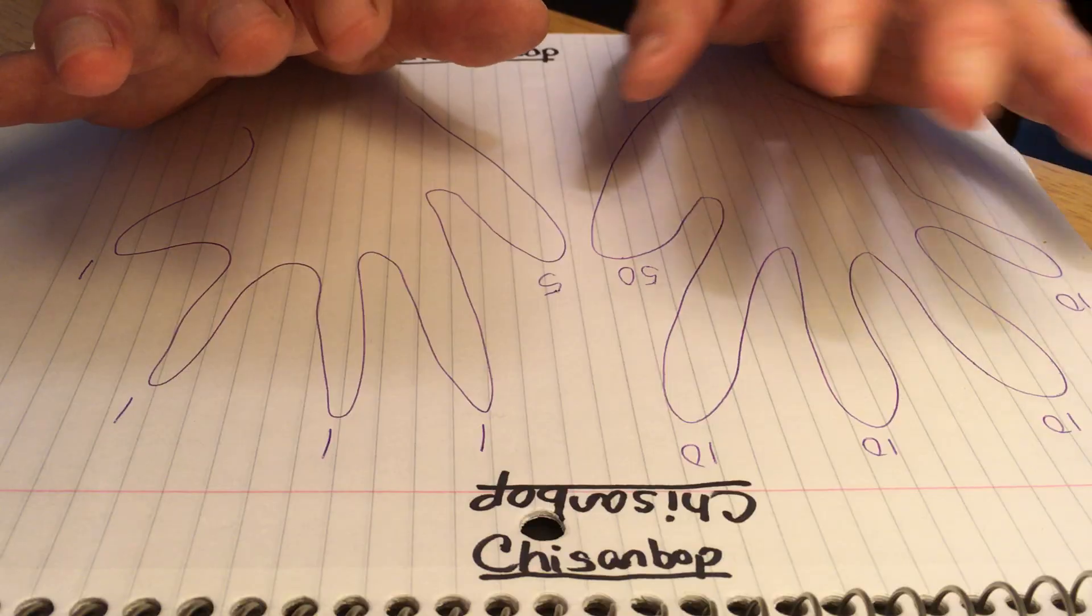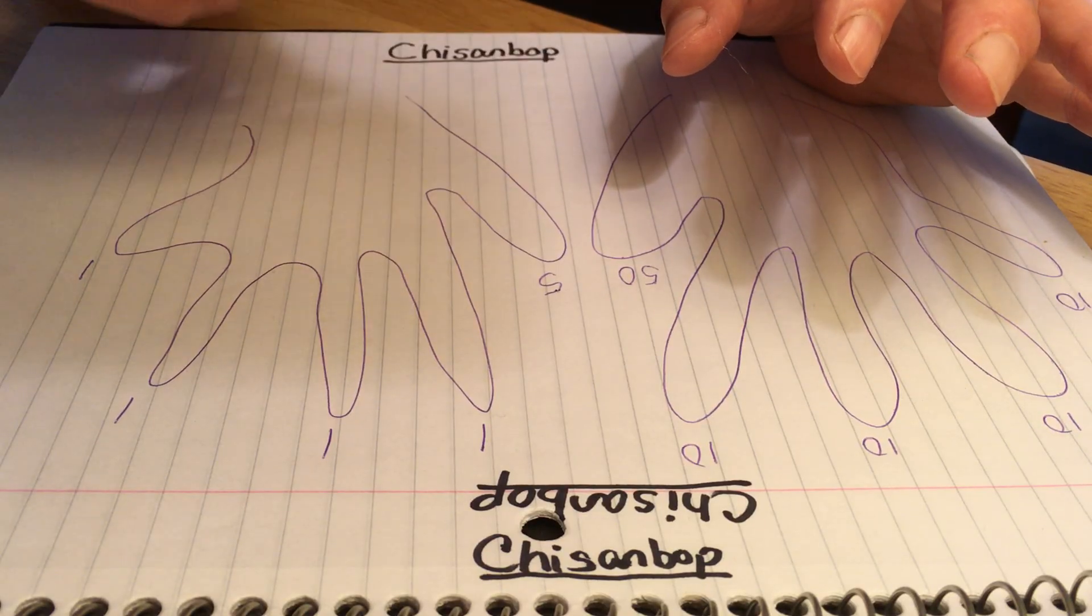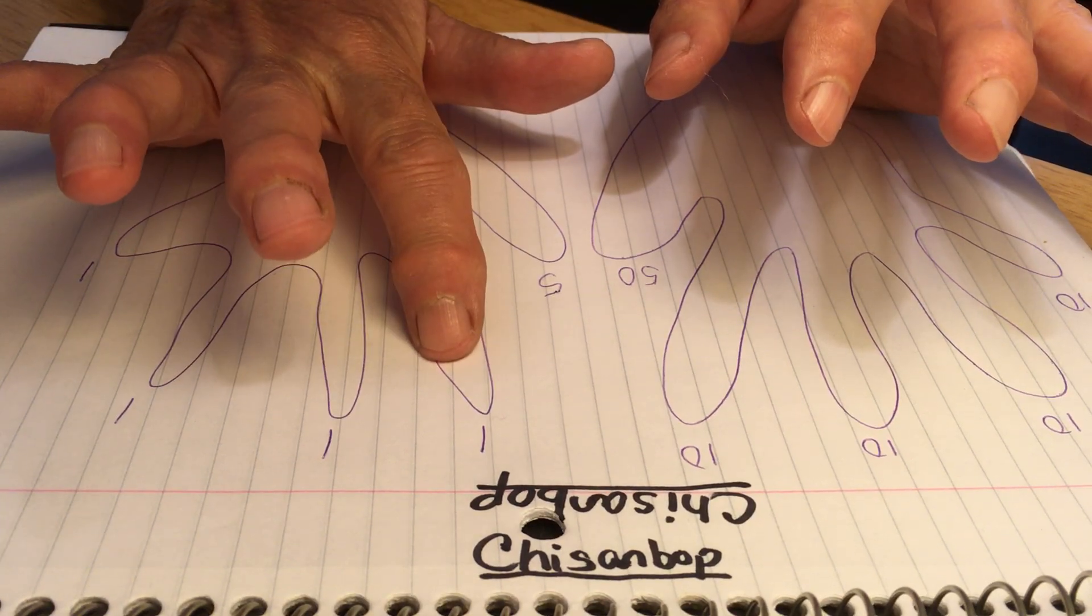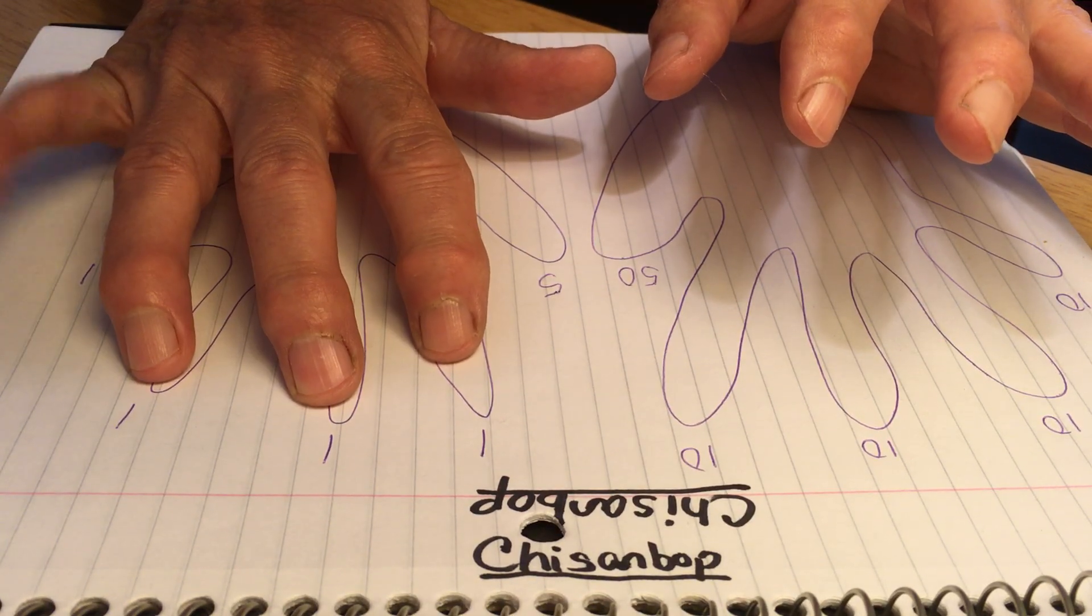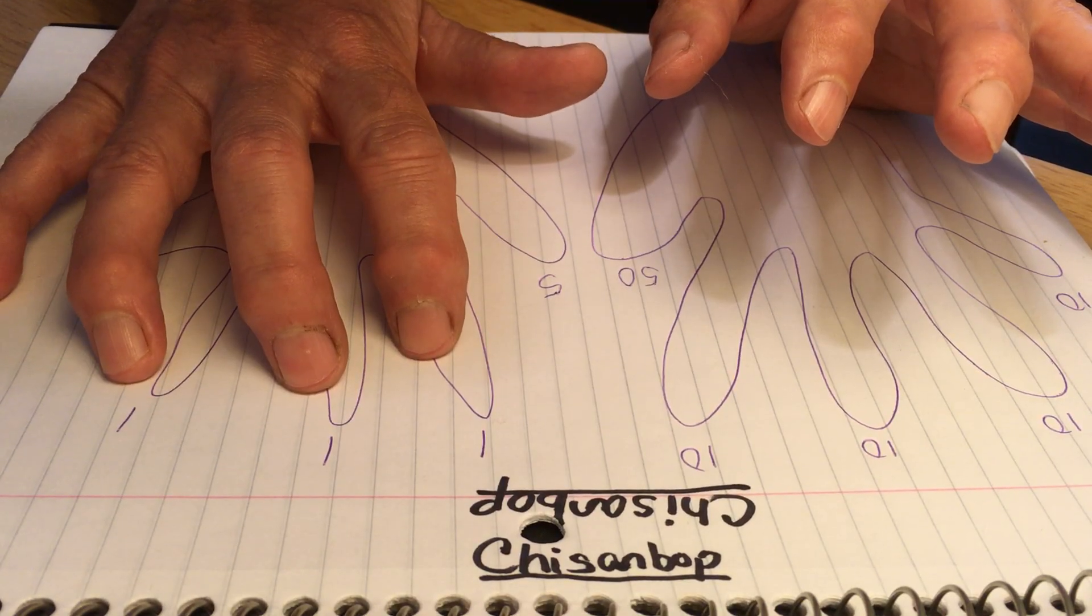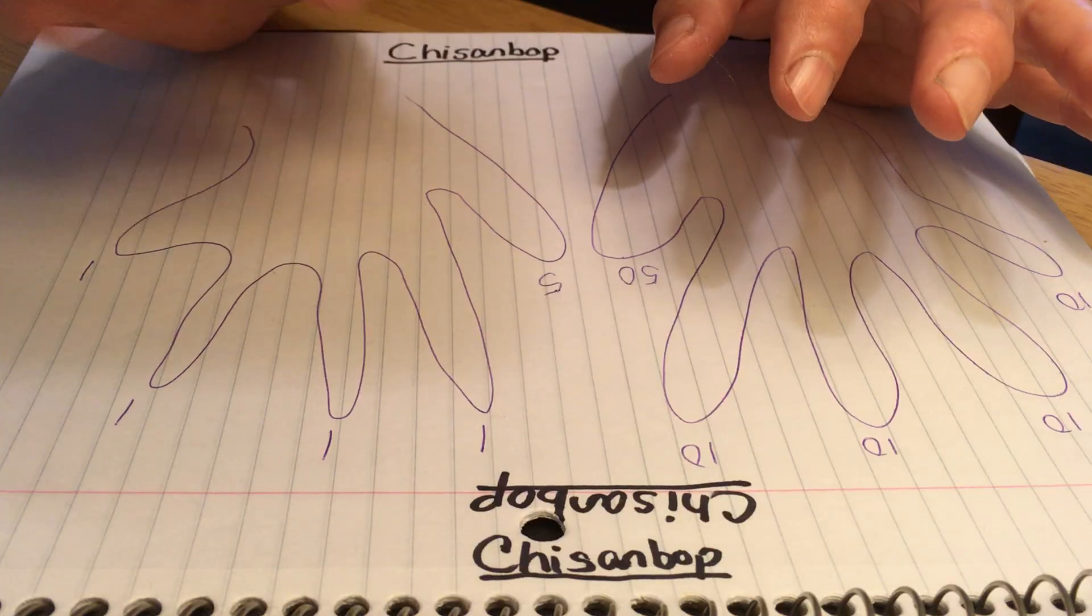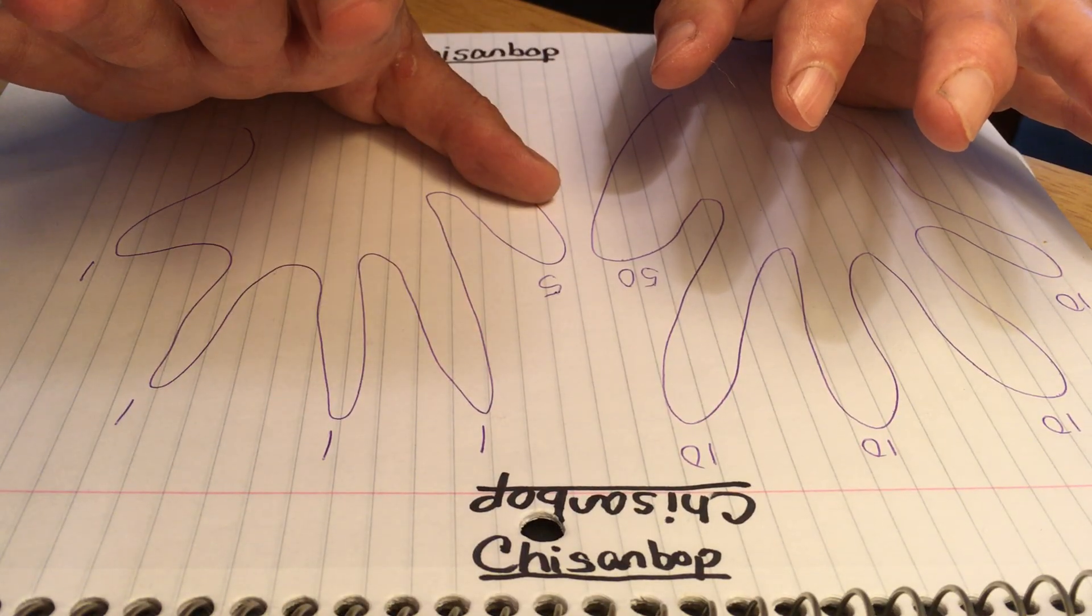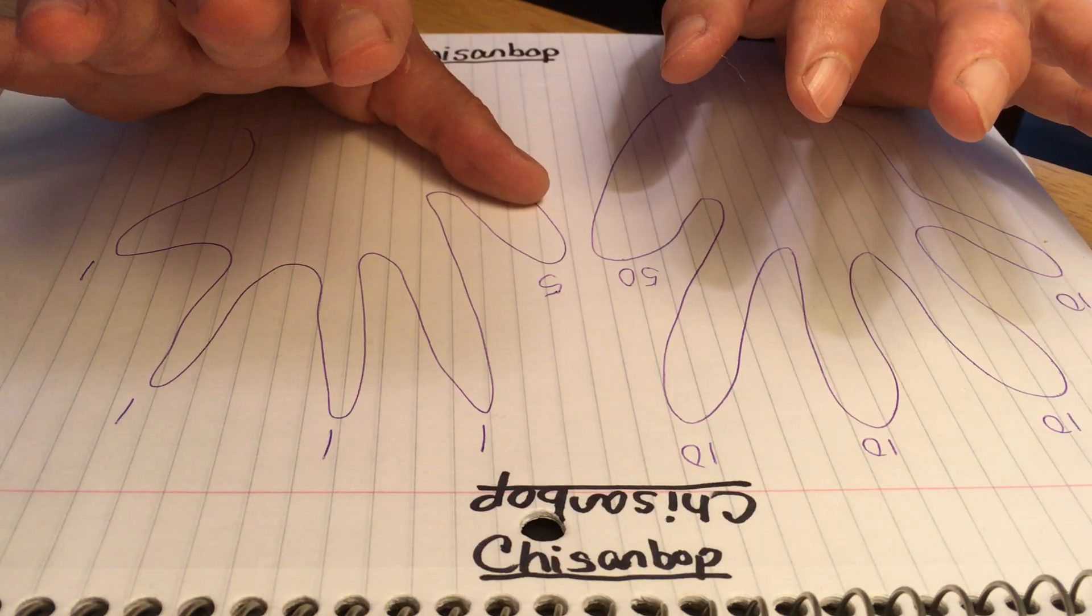Here is how you would count starting with this finger, your index finger: one, two, three, four. Notice the fingers stay down because this represents four. One, two, three, four, five. When you hit the five, all these fingers come up.